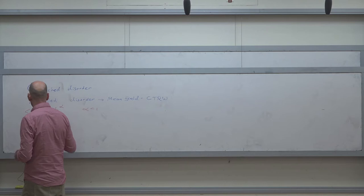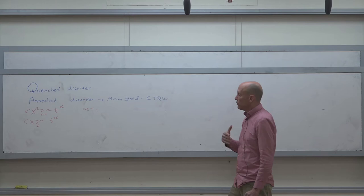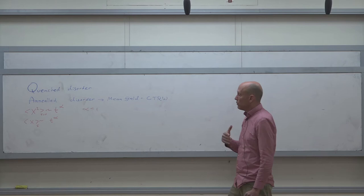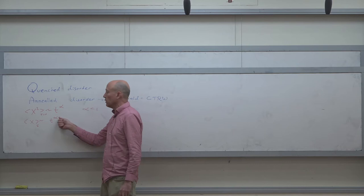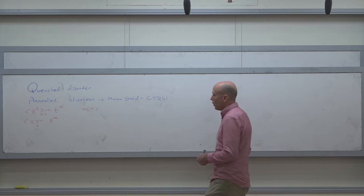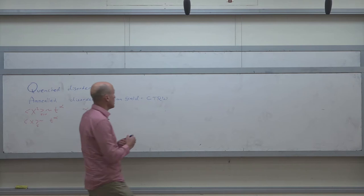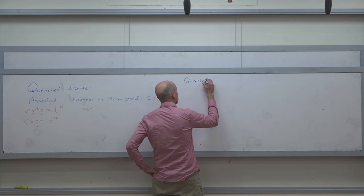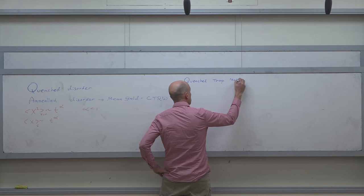If there is an external field in addition to the local disorder, the mean is not zero and the drift goes like T to the alpha. When alpha is less than one, from a measurement point of view, we say the system is very disordered — a clean system would give alpha equal to one. Now we have in mind the quenched disorder, specifically the trap model, which I will discuss.